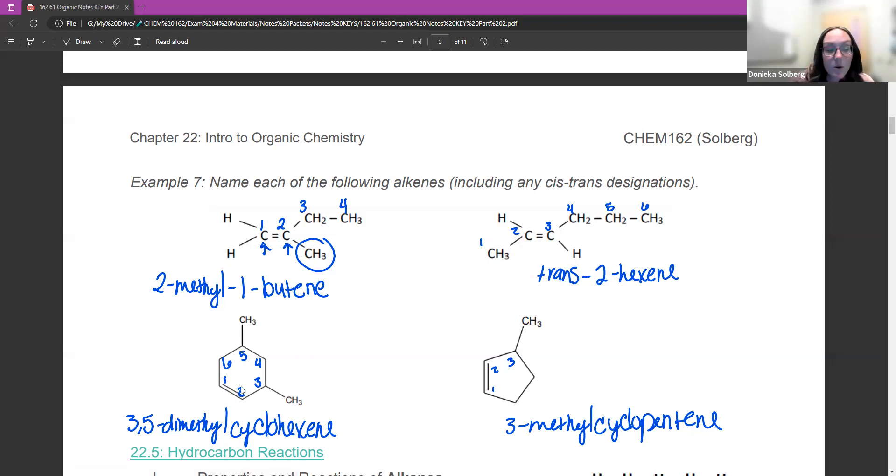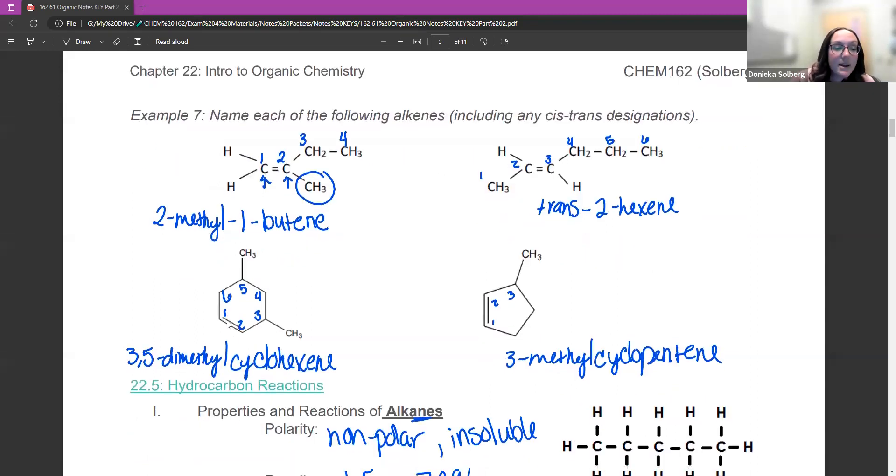Now I got some cyclos. Remember, if you have cyclos, the double bond has to be between carbons one and two. So this is cyclohexene. You don't have to tell me where the double bond is because it's always between one and two. You do not put one in front of it. You only do that for the long chain. I've got a methyl on carbon three and five. So it's 3,5-dimethylcyclohexene.